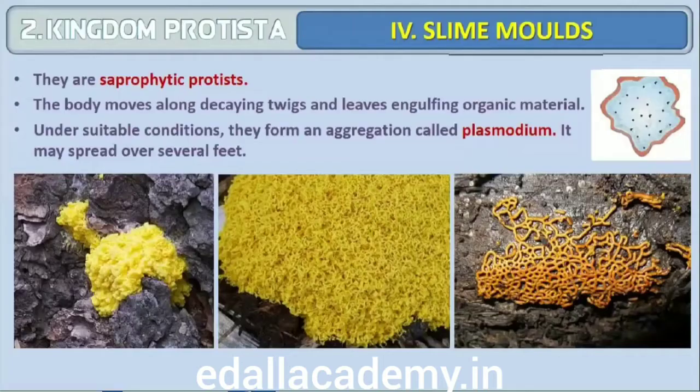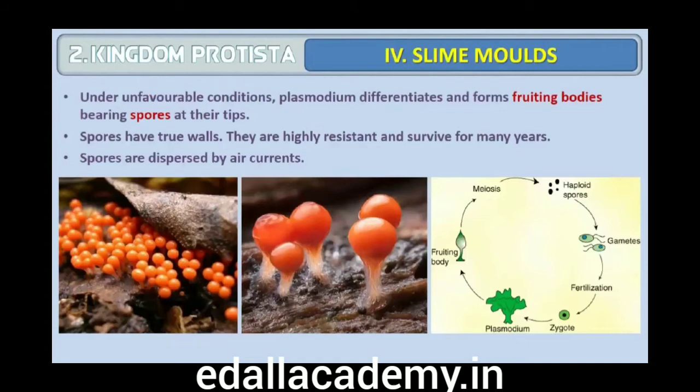Fourth are slime molds. Slime molds are saprophytic protists. The body moves along decaying twigs and leaves, engulfing organic material. Under suitable conditions, they form an aggregation called plasmodium which may grow and spread over several feet. During unfavorable conditions, the plasmodium differentiates and forms fruiting bodies bearing spores at their tips. The spores possess true walls, are extremely resistant and survive for many years even under adverse conditions. The spores are dispersed by air currents.